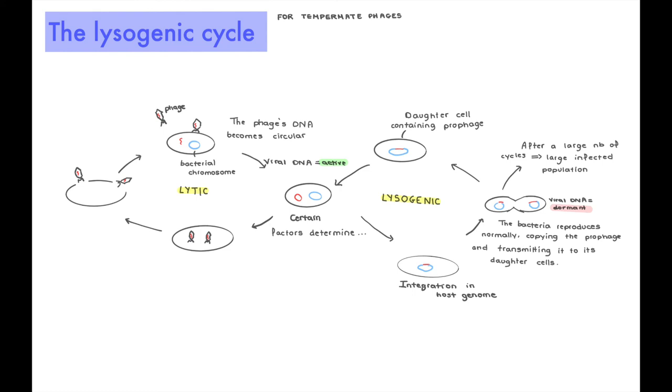After a large number of cycles, because obviously those bacteria daughter cells are themselves also going to reproduce. And since they all have the phage, they're going to transmit the genome of the phage to their, well, granddaughter cells, I guess you could say. So now we have our daughter cell that's containing a prophage. What's going to happen is the viral DNA is going to get out of the host cell DNA. And here we come back to our junction point. Either it's just going to stay as it is and recopy itself as the dormant DNA, or the DNA is going to become active and we're going to enter into the lytic cycle.